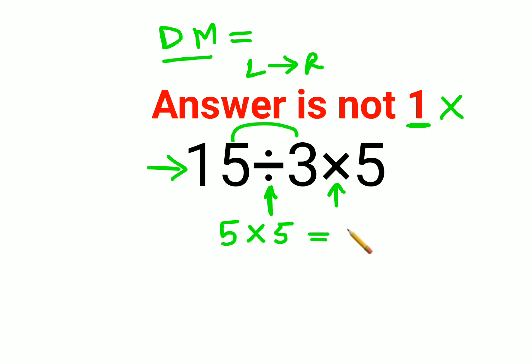Now for those of you who thought, why will the answer not be 1? There is a case when it can be 1 if it was given as 15 divided by 3 into 5, but this was given in a bracket. So when you do this, when it is given in a bracket, you need to do the brackets first.